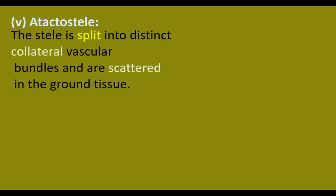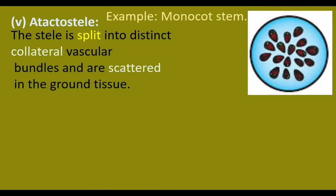Atectostele: the stele is split into distinct collateral vascular bundles, and these collateral vascular bundles are scattered in the ground tissue. All tissues other than the outer epidermis and vascular tissues are ground tissue. In the diagram, the blue background represents the ground tissue, and collateral vascular bundles are scattered within it. Example: monocot stem.